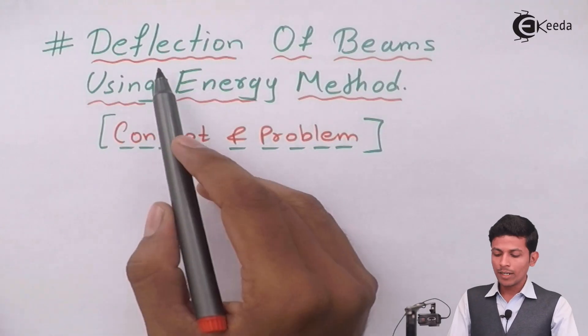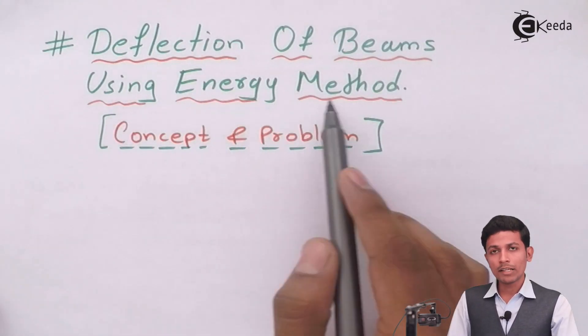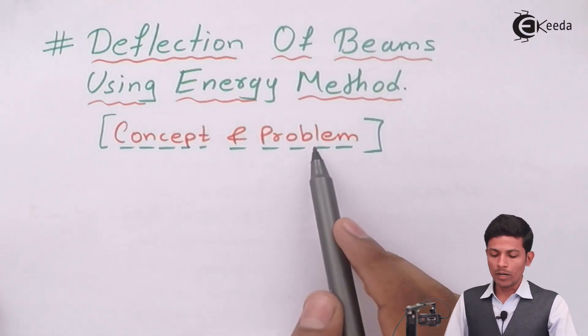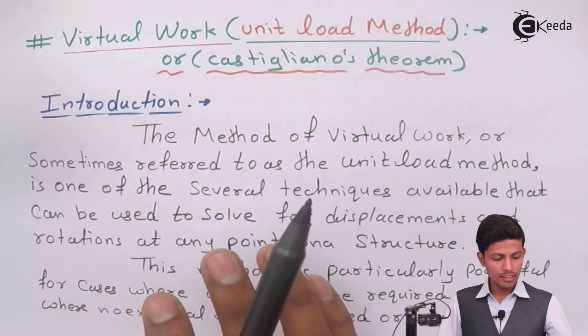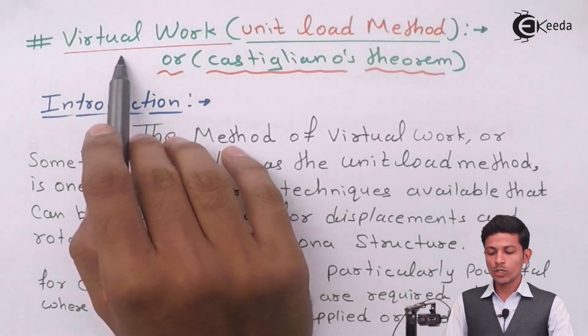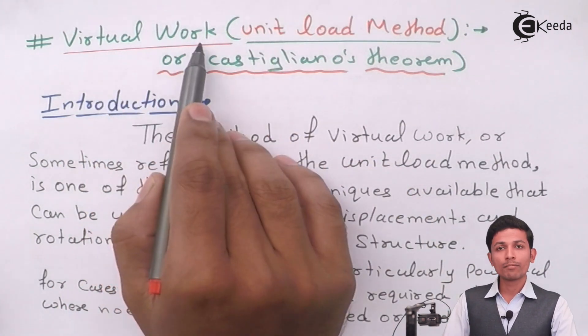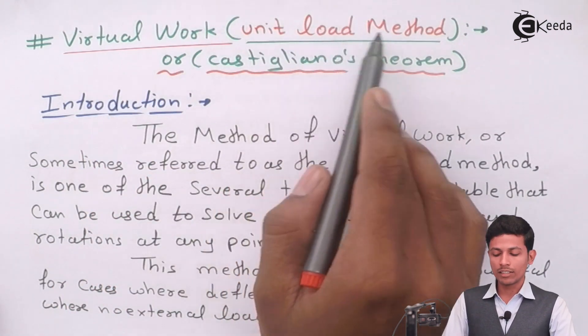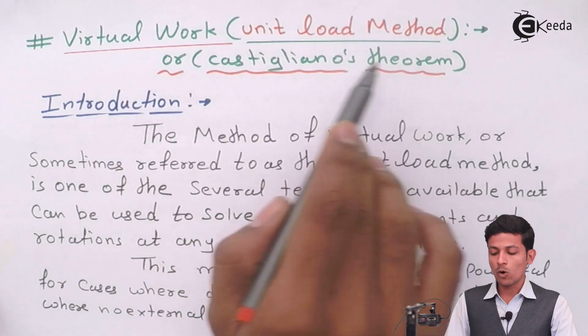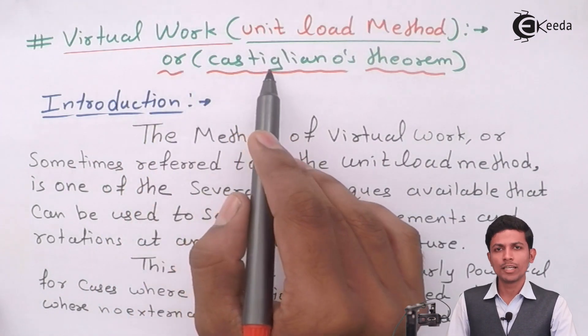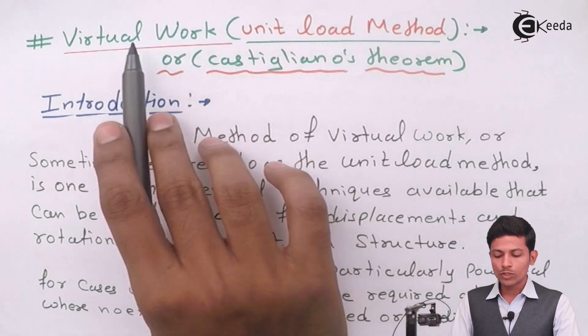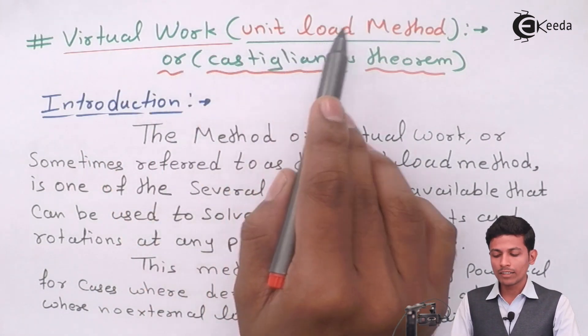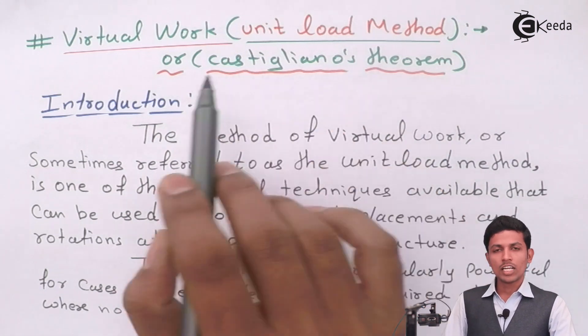This is the chapter name, deflection of beam using energy methods, concepts and their problems. Today, we are seeing in detail the virtual work method, virtual work method or unit load method or Castigliano theorem. All the three names are same. Now, let's see the introduction.